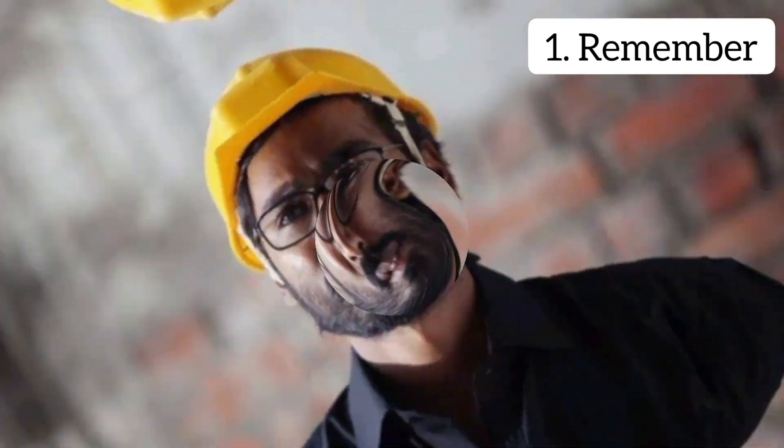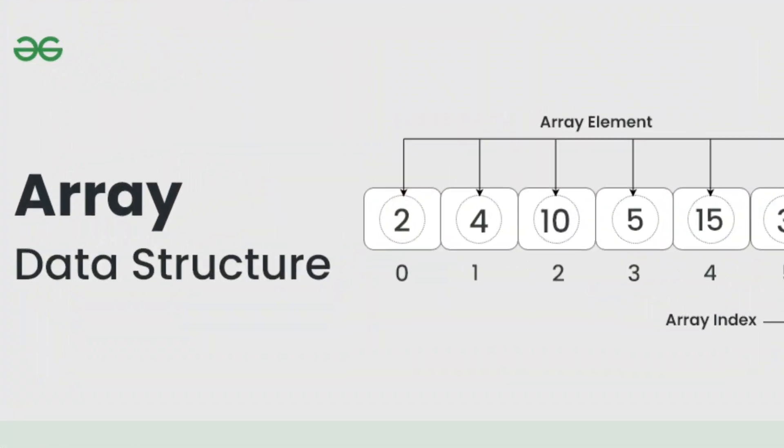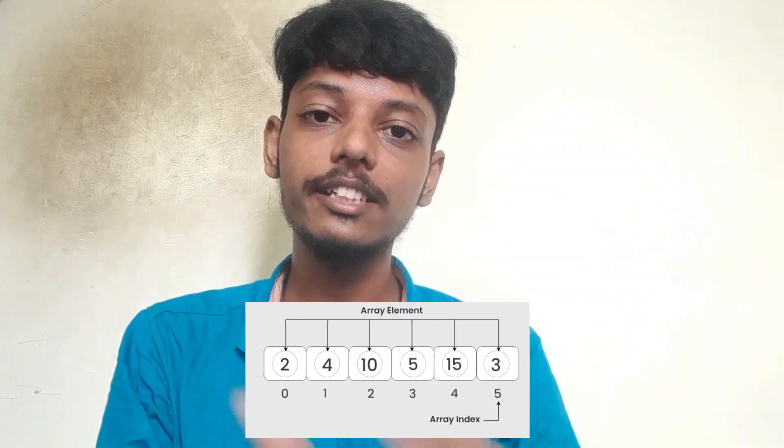For example, if you want to use a programming language, you can use syntax. If you want to use a syntax, you can use a data structure. What is an array? The array is a data structure. What is a data structure? A sequence of the same data type. If you want to use a list, you can use the same type of elements.